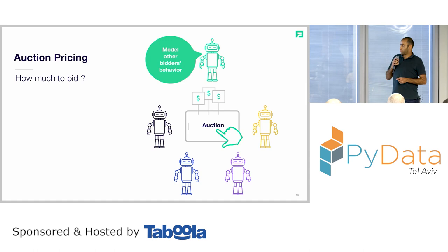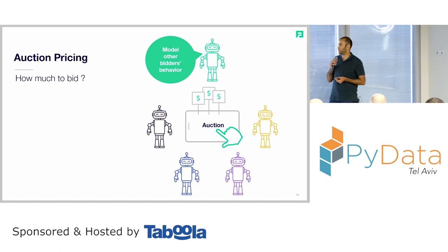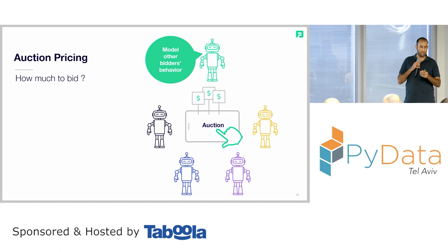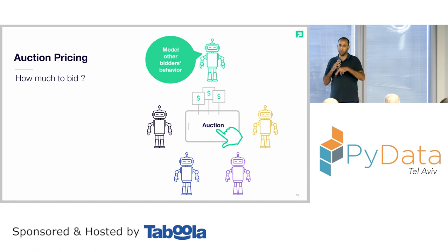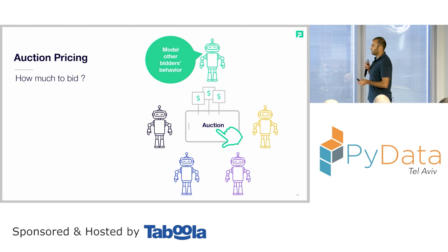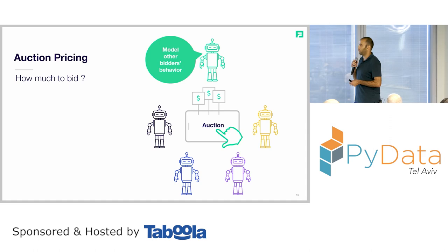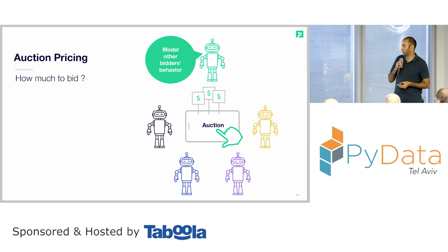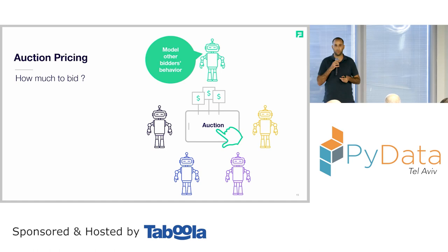Our main challenge, which we'll focus on today, is auction pricing. The main question is basically how much to bid. This question splits into two: first, how much to bid given a specific user and context; and second, how much to bid given the competition. For example, if five bidders bid $1, $2, $3, $4, the fifth bidder could bid $10 and probably win, but could also win with $5. The main goal is to minimize the amount we put on bids while maximizing the number of times we win the auction.